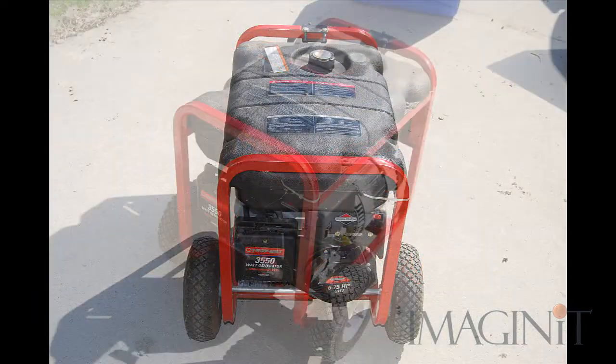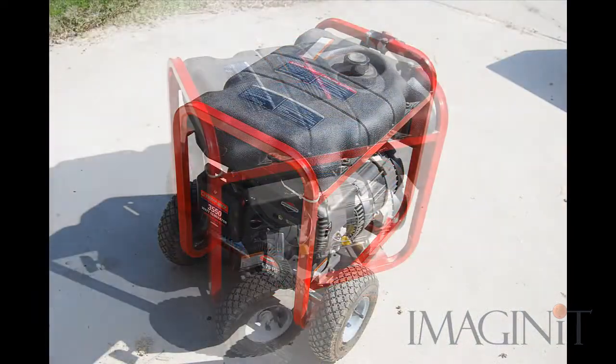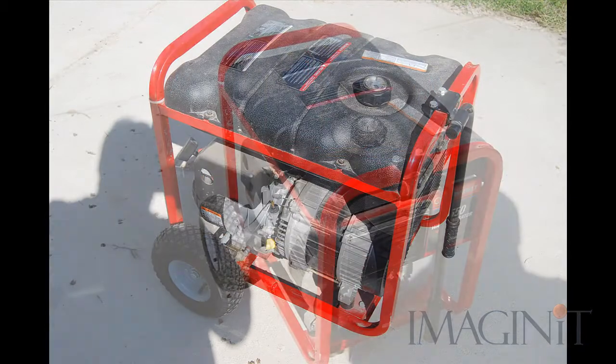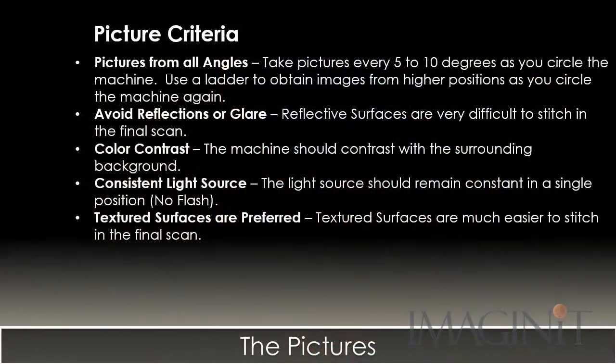Some machines will require more, some less. There are several other criteria to keep in mind when photographing the machine. You want to take pictures from all angles — take pictures every 5 to 10 degrees as you circle the machine. Use a ladder to obtain images from a higher position as you circle the machine again.